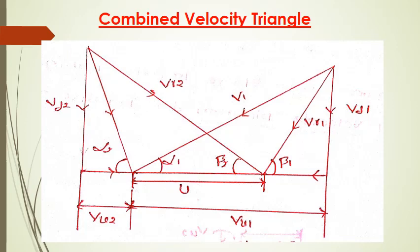This is the combined velocity triangle. In earlier slides we have seen inlet and outlet triangles separately, but here I have combined both. This combined velocity triangle is very useful to solve problems. You can observe: u is tangential speed of the rotor, v1 is absolute velocity at inlet, v2 is absolute velocity at outlet, vr1 is relative velocity at inlet, vr2 is relative velocity at outlet, vf1 and vf2 are radial components of absolute velocity at inlet and outlet, vu1 and vu2 are tangential components of absolute velocity at inlet and outlet.